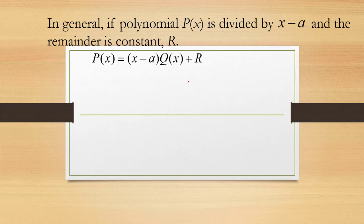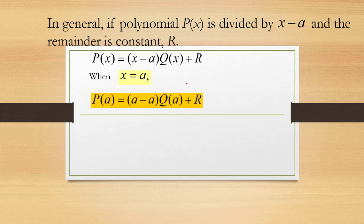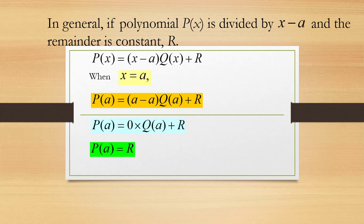Now, what is going to happen if we evaluate P(a)? We could write P(a) would be equal to (a minus a) times Q(a) plus r. Well, a minus a is 0, so for any value of Q(a), if you multiply it by 0, then all of this is going to be 0. So P(a) is going to be equal to r. And so, you are done. This is the proof of the polynomial remainder theorem.